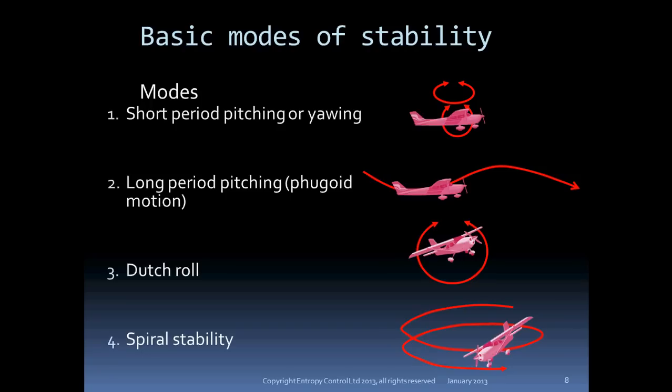You'll have heard of the terms static and dynamic stability. Static stability is the tendency for the aircraft to return to its original path after a disturbance. Dynamic stability is the tendency for motions caused by a disturbance to gradually dissipate. You cannot have dynamic stability unless the motion is statically stable, but static stability does not necessarily mean that the motion is dynamically stable. From a practical standpoint, these classifications are not very useful. What matters more are the timescales of the motions — if the timescales are long enough, a pilot can cope, even if there's some instability.